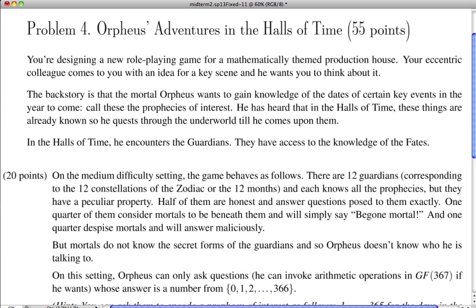You see, you're designing a new role-playing game. Your eccentric colleague comes to you with an idea for a key scene. The backstory is that the mortal Orpheus wants to gain knowledge of the dates of certain key events in the year to come. These are called the prophecies of interest. So this is what he wants to know. He wants to know these prophecies of interest.